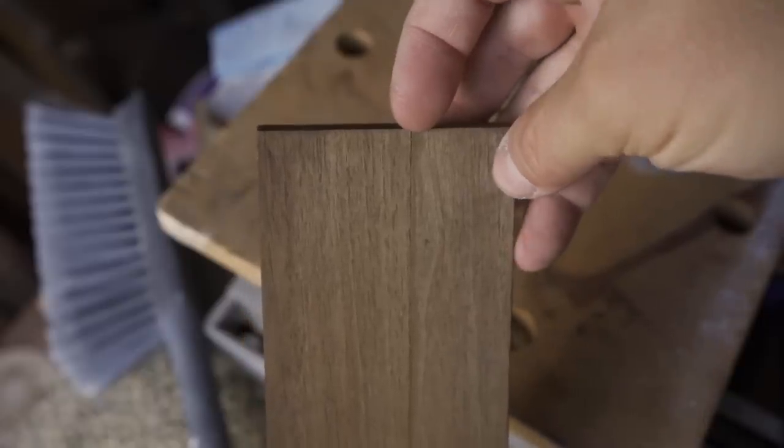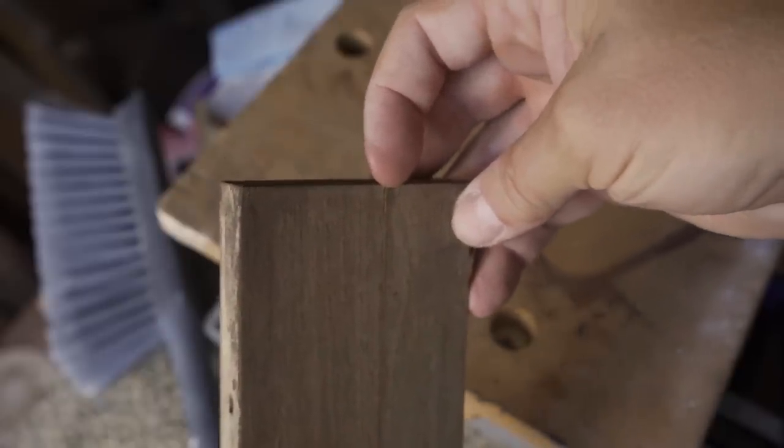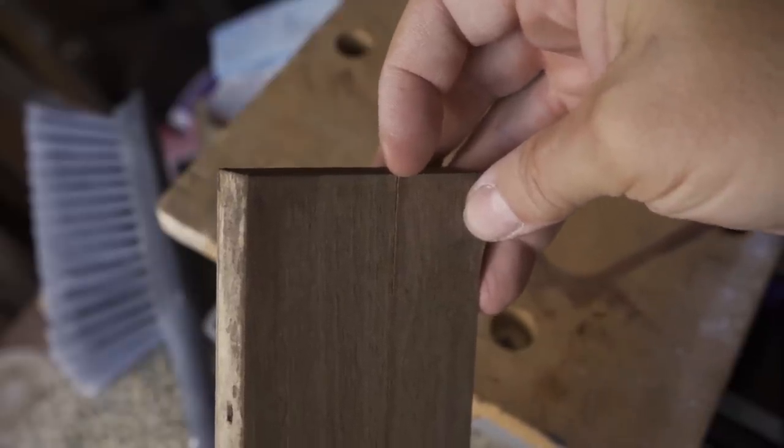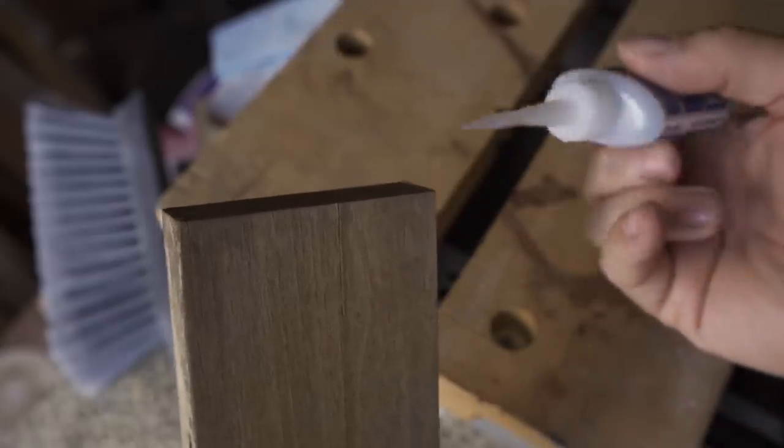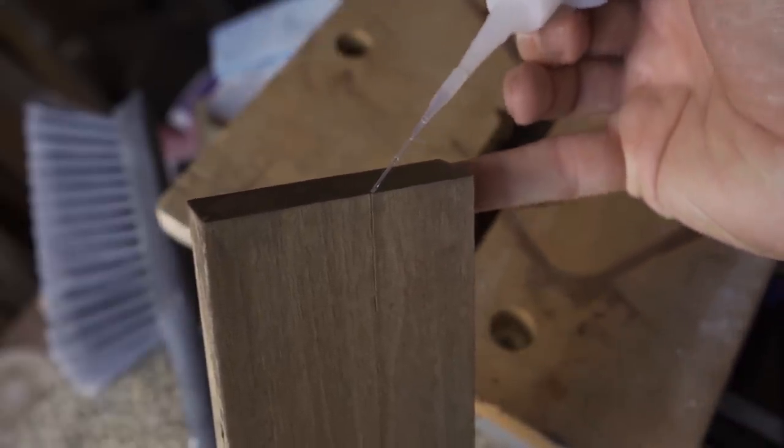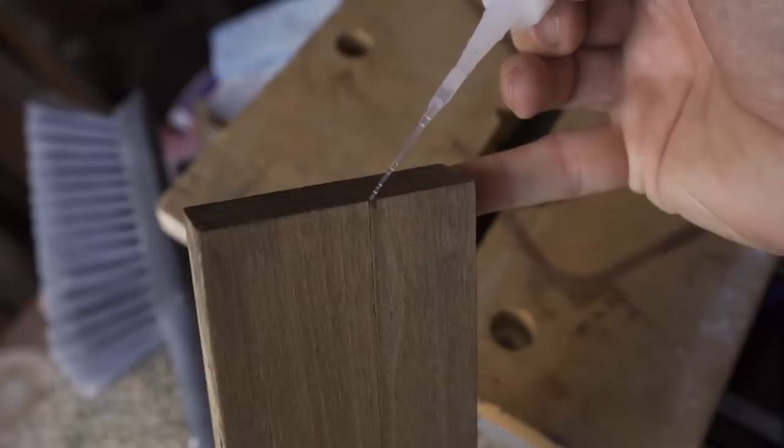This piece had a veneer seam that ran down the center of the board, and the end of it was just a little bit loose. I could just barely lift it with my fingernail. And for something like this, very thin superglue works great to just dribble it in there and get it stuck back together again.